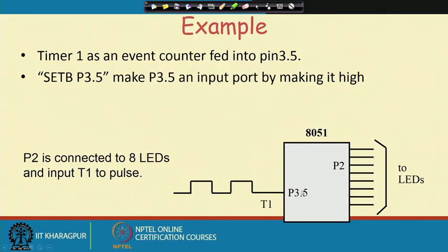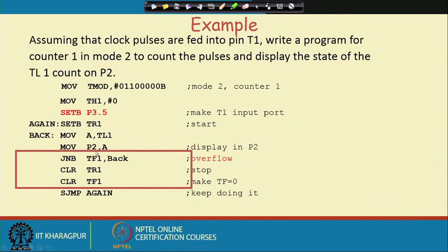The program we have seen here has Timer 1 acting as an event counter. This is pin 3.5, that is the T1 pin. Pulses are fed there, and setting bit P3.5 makes port 3.5 an input port by making it high. For display purposes, we can have 8 LEDs connected on port P2's lines. We are outputting the count of TL1 through a resistor onto P2.